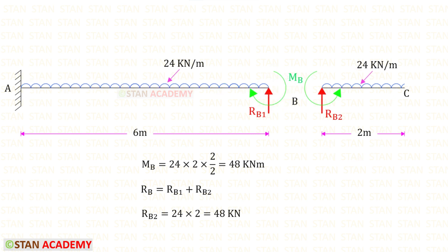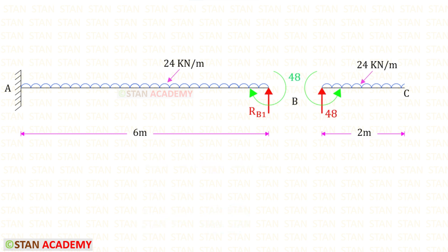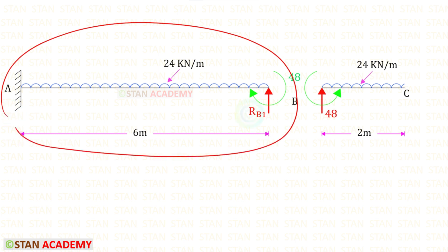To find RB we have to add RB1 and RB2. We can easily find RB2: multiplying the load 24 by the distance 2, we get RB2 equal to 48 kilonewtons. Now let us take this part and find RB1.